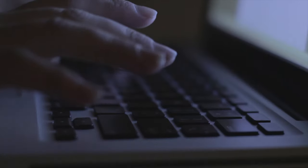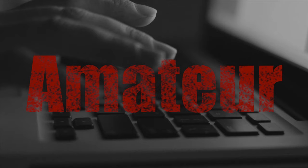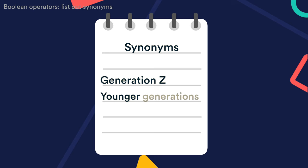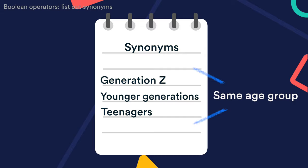Now who doesn't know how to type in their keywords and hit enter? That's for amateurs! I'm about to show you two more tricks to instantly narrow down your search and find much more relevant papers. For the first trick, you should think and write down all the synonyms or subtopics of the keywords you've searched for. In our case, Gen Z, younger generations, and teenagers all represent the age group we're looking for.